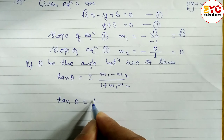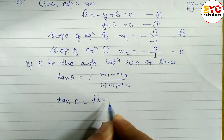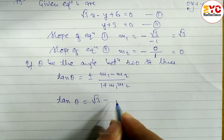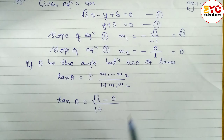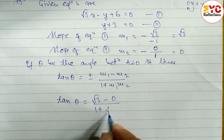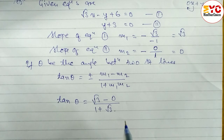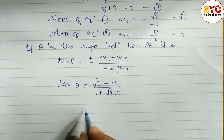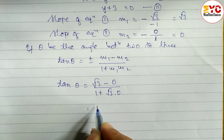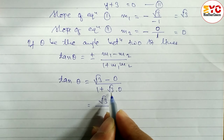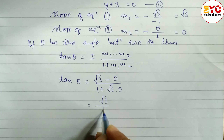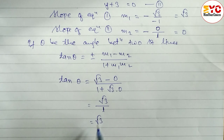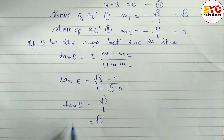The value of m1 is root 3, so we write root 3 minus m2 which is 0, divided by 1 plus m1 times m2 — that is root 3 into 0. Root 3 minus 0 is root 3, and root 3 times 0 is 0, so the denominator is 0 plus 1 which equals 1. We get tan theta is equal to root 3.